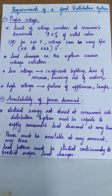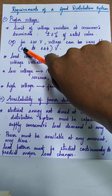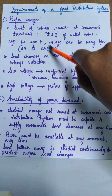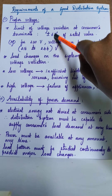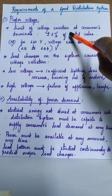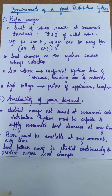Coming to the first requirement — proper voltage. At the consumer premises we need 230 volt, but this can be allowed to fluctuate within a safety limit of plus or minus 6%. So if the rated voltage is 230 volt, it can vary only between 216 volt at the lower end and 244 volt at the higher end. The main cause of this voltage variation is drastic changes in the load on the system.